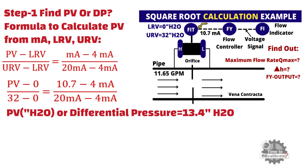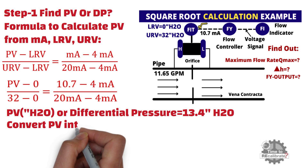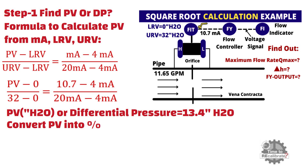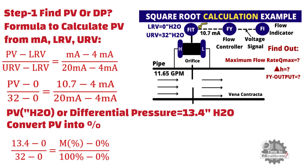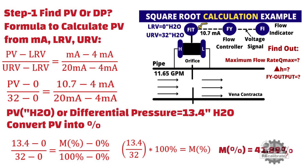Now convert this differential pressure, or process value, into percentage. To convert the process value into percentage, put the values into this equation and do the simple math calculation. You will get 41.88%.